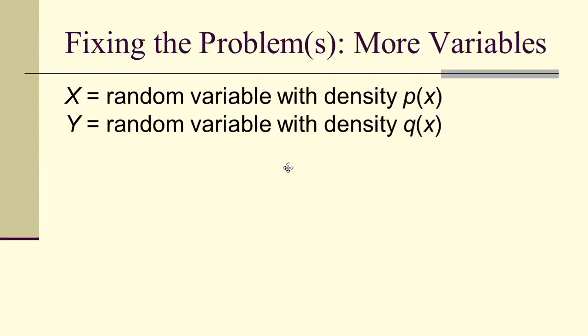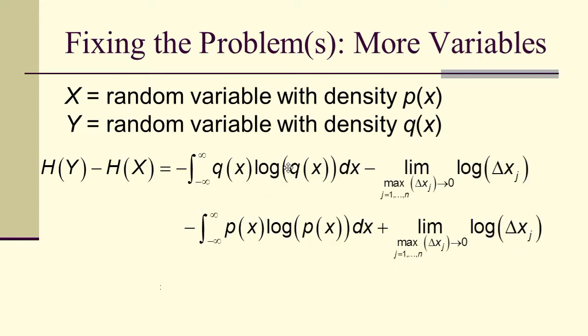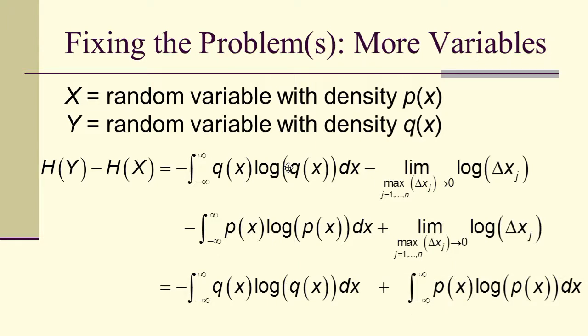So, how do we fix the problem? Maybe we can use more variables. Let's suppose x is a random variable with density p, and y is a random variable with density q, and let's take the difference. The difference has the property that the logarithm terms going to infinity — the limit of logarithm terms — cancel, and I'll get just the integrals. The infinities cancel each other. I still have log of something with units, because p and q have units, so we still have red flags on the arguments of the logarithms.